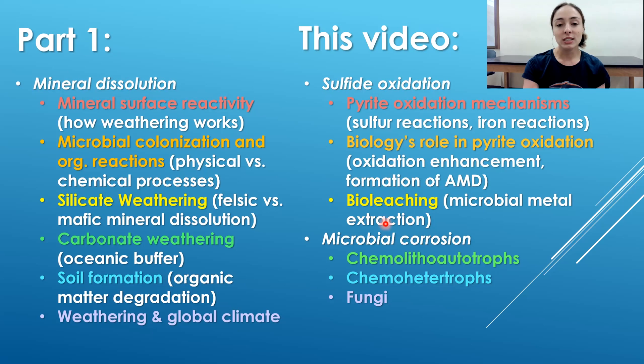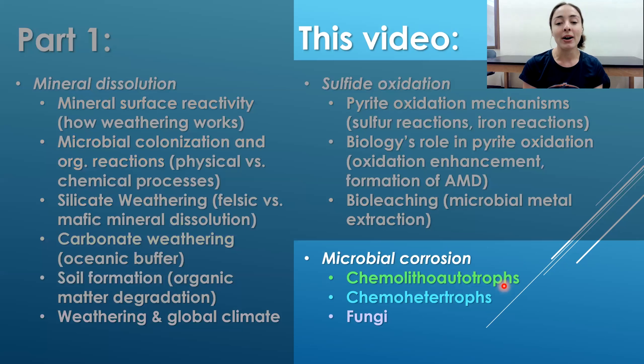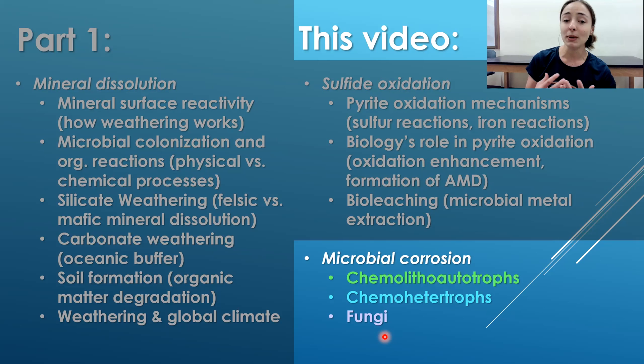Today we're talking about microbial corrosion specifically by chemolithoautotrophs, chemoheterotrophs, and fungi. Don't be scared by those big words — those are just different types of bacteria grouped in a systematic way. If you're curious what those terms mean, check out my metabolic diversity video where I talk about what chemo versus photo means, what litho versus organo means, and what hetero versus auto means.